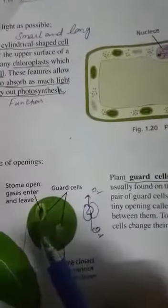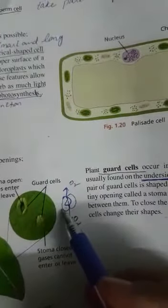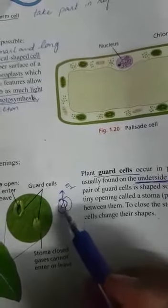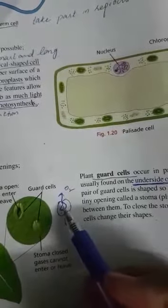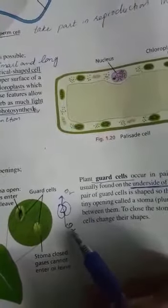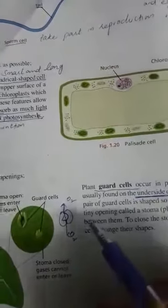Next is the guard cell. Guard cells are found usually on the underside of the leaf. When we look at the diagram at the bottom of the guard cell, you can see two bean-shaped structures. When these two bean-shaped structures combine together, a hole is created inside them, and oxygen can leave through the hole while carbon dioxide enters the leaf cell through this opening. This opening is called the stomata.